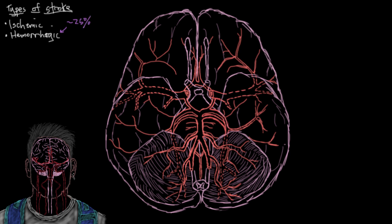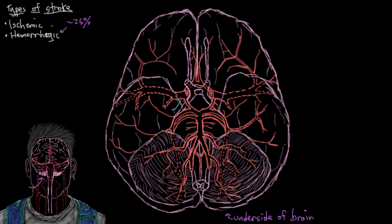We're looking at an underside view of a brain, because this view allows us to see the vessels most commonly involved with hemorrhagic strokes — the vessels of the circle of Willis. A hemorrhagic stroke is essentially when one of your blood vessels in your brain springs a leak and begins to leak blood out of the vessel and into the skull cavity.